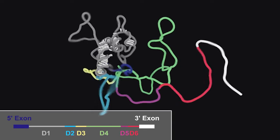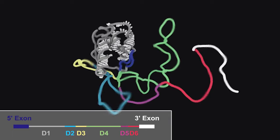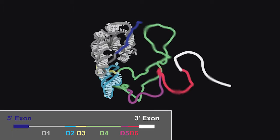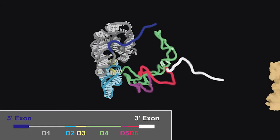Domain I folds first, acting as a scaffold for folding of the rest of the intron domains. Domain IV functions as the anchor for the maturase protein.